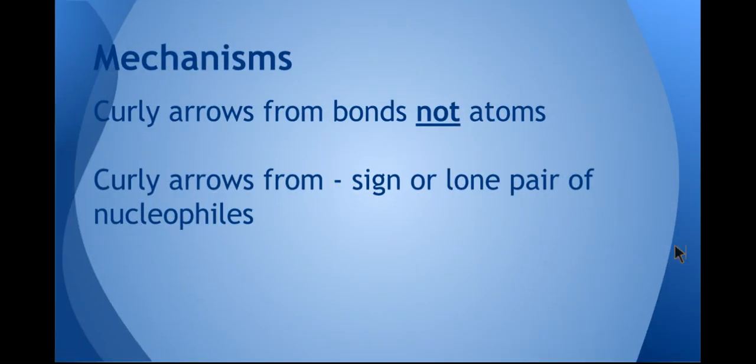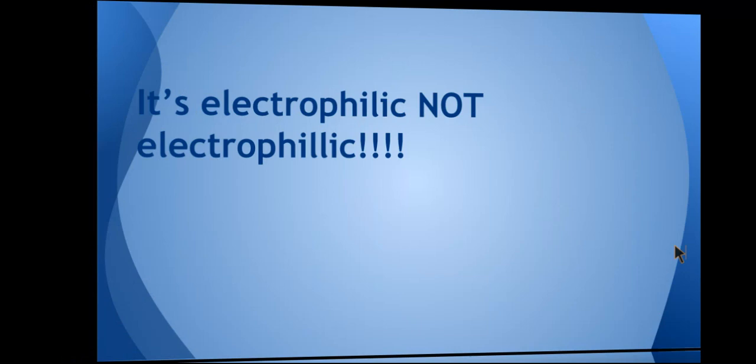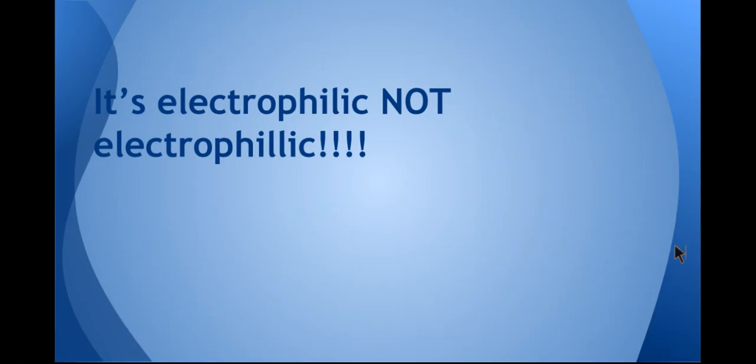Mechanisms: curly arrows from bonds not atoms, so that's the C=C double bond not the C atom. Curly arrows from the minus sign or the lone pair of your nucleophile. It's electrophilic, not electrophilic.